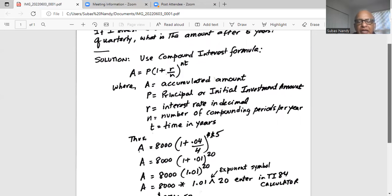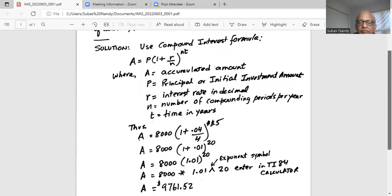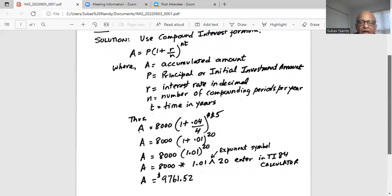If I use a TI-84 calculator, for example, I do this calculation in one shot which is 8,000 multiplied by 1.01. Then I press the exponent symbol or exponent button in the calculator which is shown here. And then after the exponent symbol, I hit the exponent button, I enter 20. And then enter. And the final answer is 9,761.52.